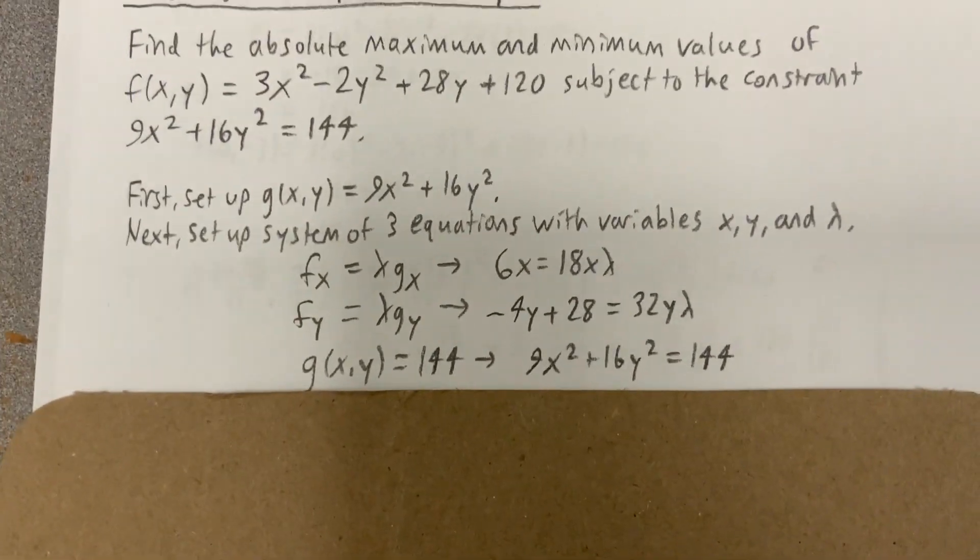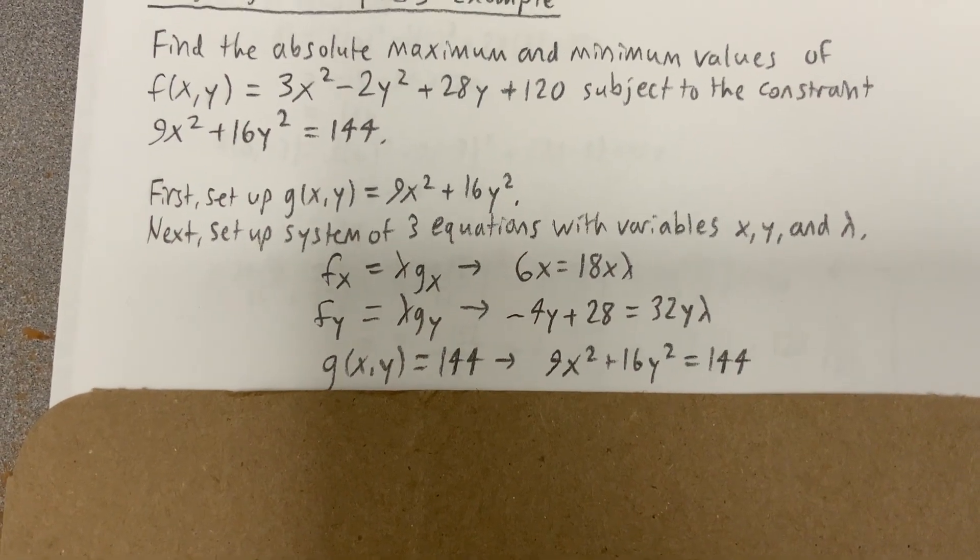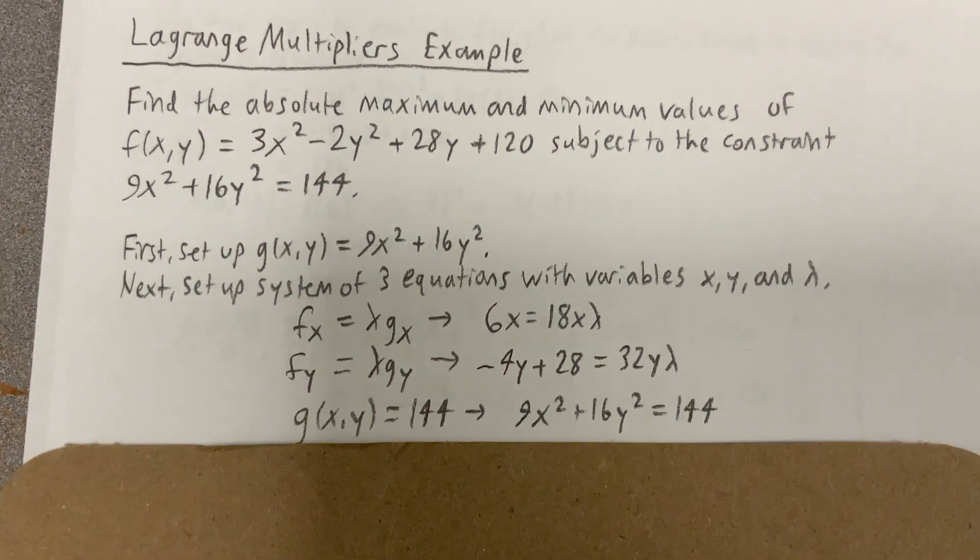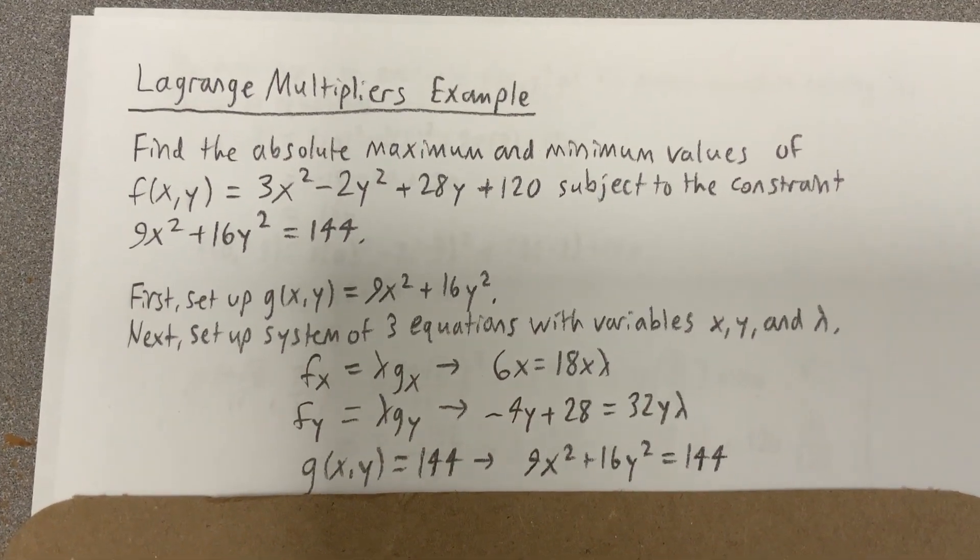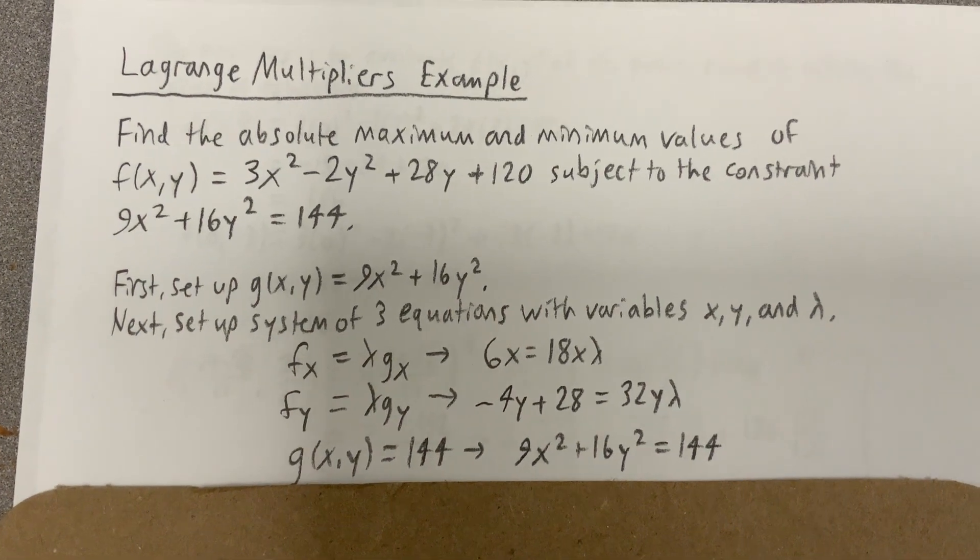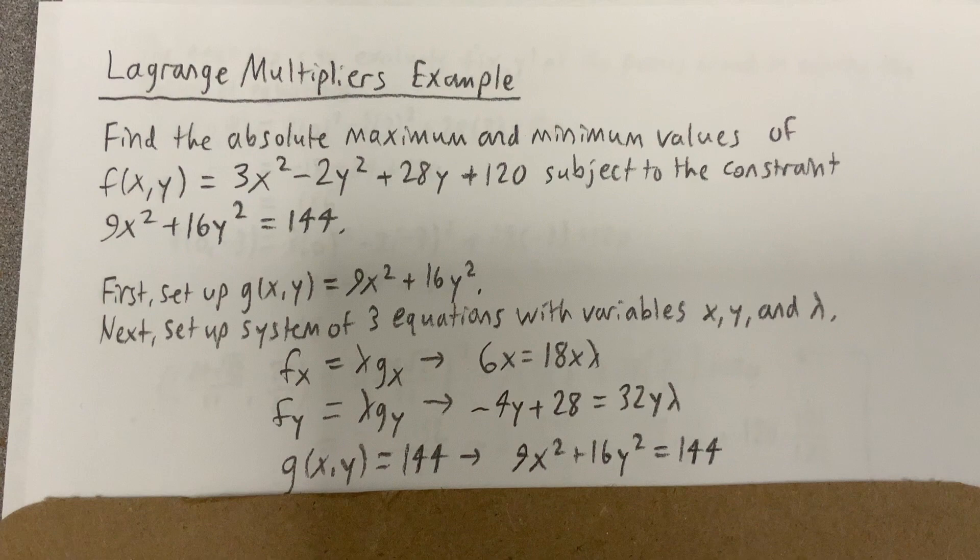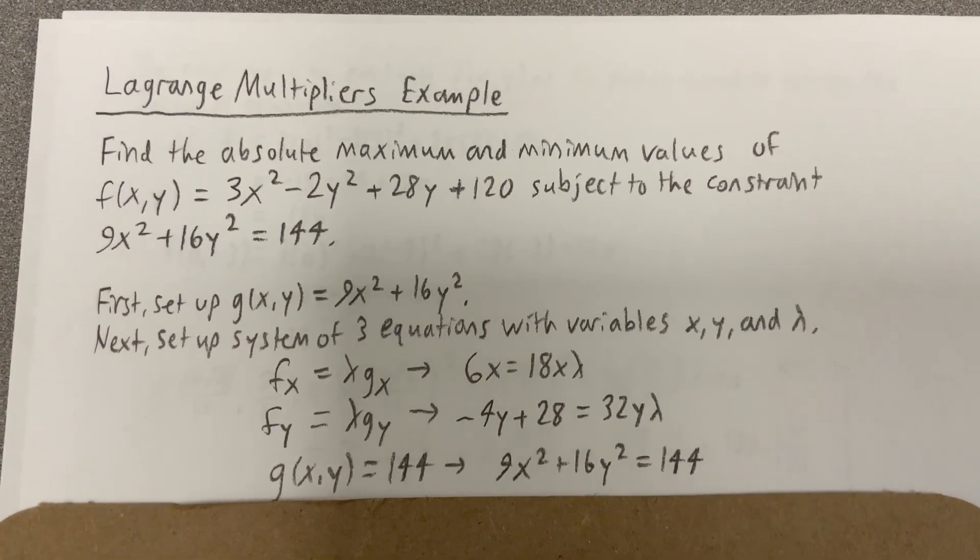Then we set up the system of three equations with the variables x, y, and λ. f_x = λg_x gives us 6x = 18xλ. f_y = λg_y gives us -4y + 28 = 32yλ. And then, of course, we got the constraint 9x² + 16y² = 144.